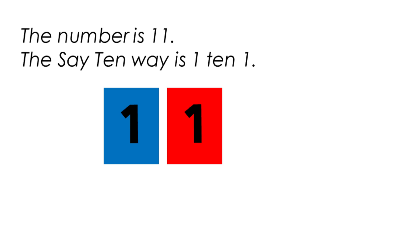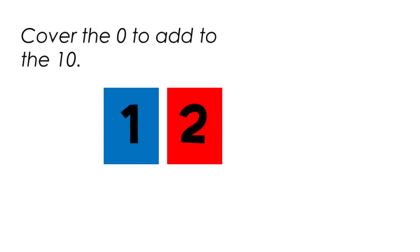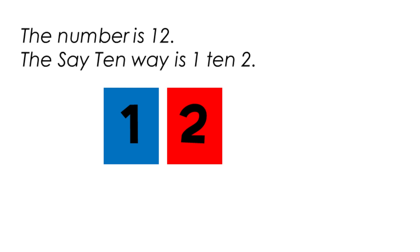Let's try it again. Cover the 0 to add to the 10. We've covered the 0 with the 2, so now the number is 12. The say-ten way is 1 ten and 2.